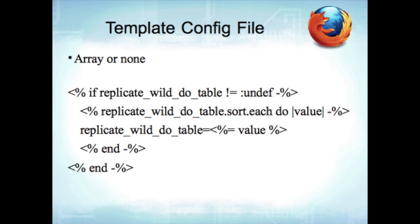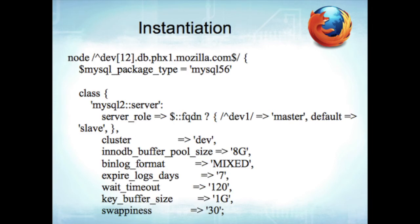Here's our instantiation — we start with dev1, dev2. We have class mysql2::server and set some variables. For server role: if your domain name is dev1, you're the master; otherwise you're a slave. So if we have 10 slaves, we only have to change one thing. If we change dev2 to be the master, we change it here. This is what I was talking about for swapping the master — all we have to do is change this one line in Puppet, push it out, make sure it's taking effect, and go from there. We monitor things — if read_only is set to ON and it's supposed to be OFF, we'll get paged within five minutes.